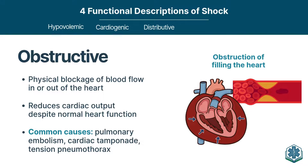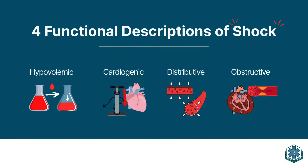Obstructive shock — we think largely of traumatic causes. Cardiac tamponade: fluid in the pericardial sac compresses the heart so it can't fill well, causing obstructive shock. Tension pneumothorax is the other one — pressure builds in the chest and our low-pressure vessels, including the inferior vena cava, can't return blood to the right side of the heart. Those are the four types: hypovolemic, distributive, obstructive, and cardiogenic.